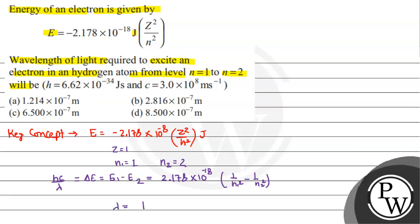it equals hc/(2.178 × 10^-18 × (1/n1² - 1/n2²)). Since n1 is 1, 1 squared is 1, and n2 is 2, so 2 squared is 4.